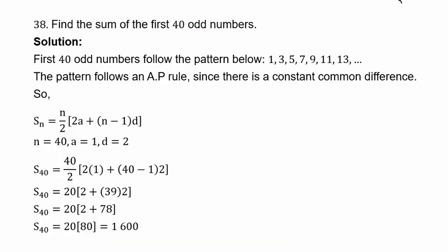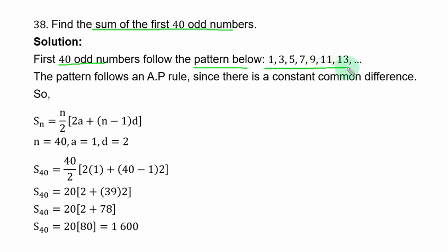Example 38: find the sum of the first 40 odd numbers. The first 40 odd numbers follow the pattern: 1, 3, 5, 7, 9, 11, 13, and so on. This pattern follows an AP rule since there is a constant common difference.